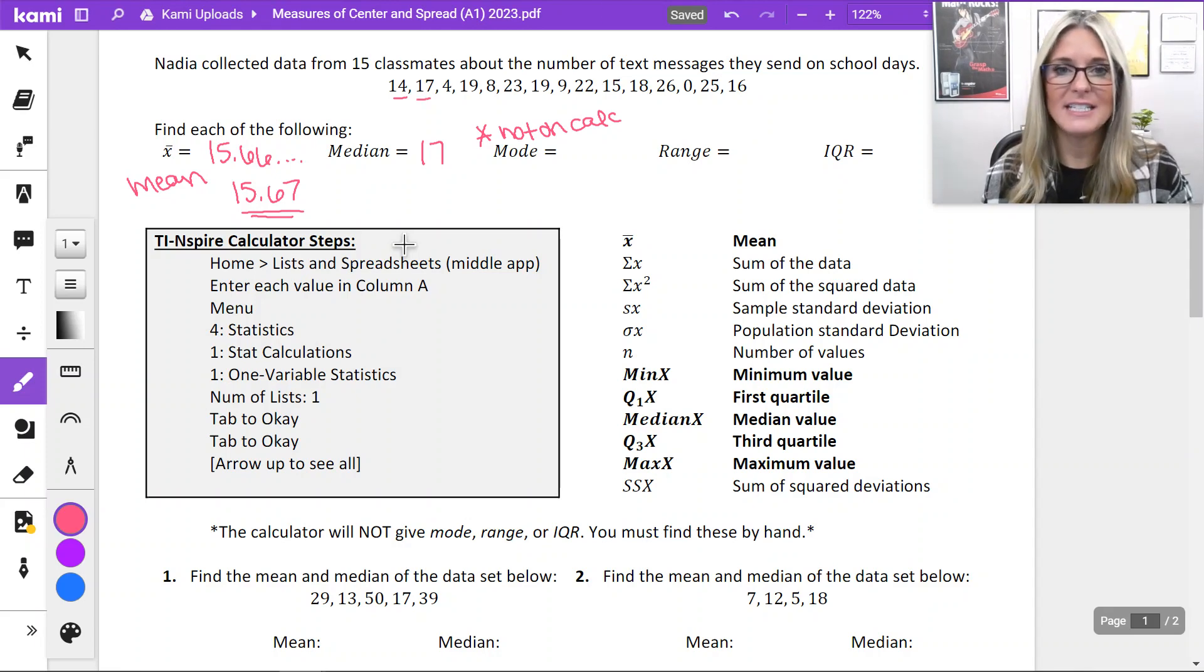Mode is not on the calculator. You just have to use your eyeballs and look. Is there another 14 in our list? No. Is there another 17 in our list? No. Is there another four in our list? No. 19? Ah, yes. I have two 19s. And you can keep going through this and double checking, but I did it in advance. So I know 19 is our only mode value.